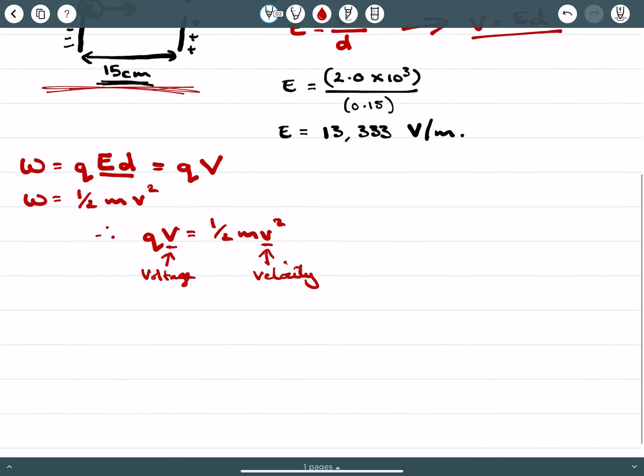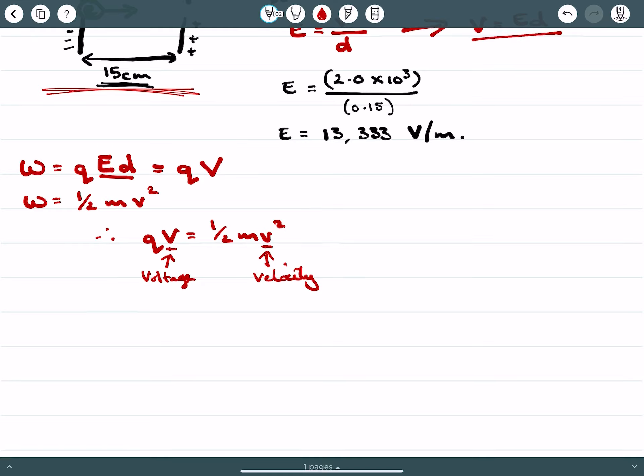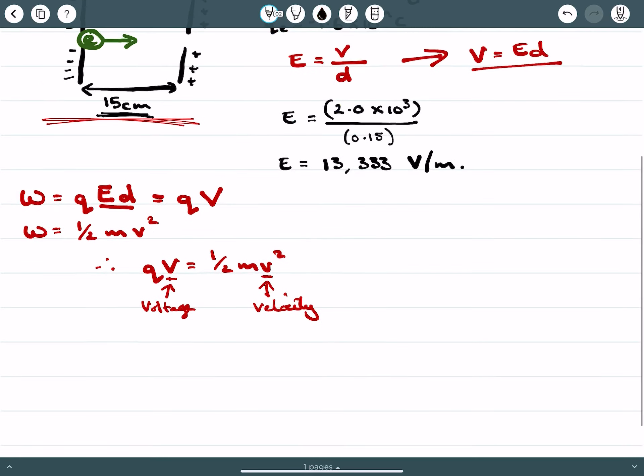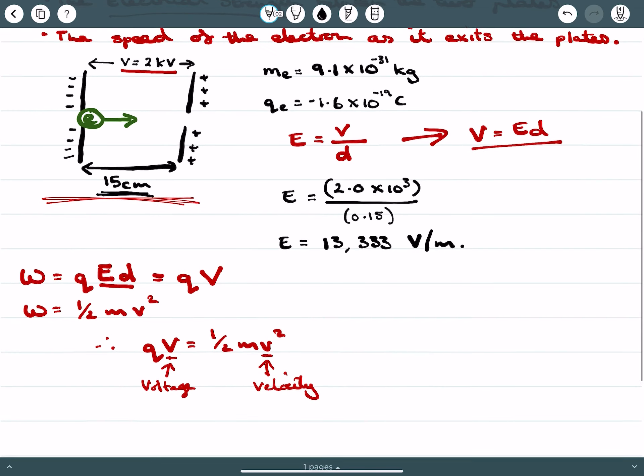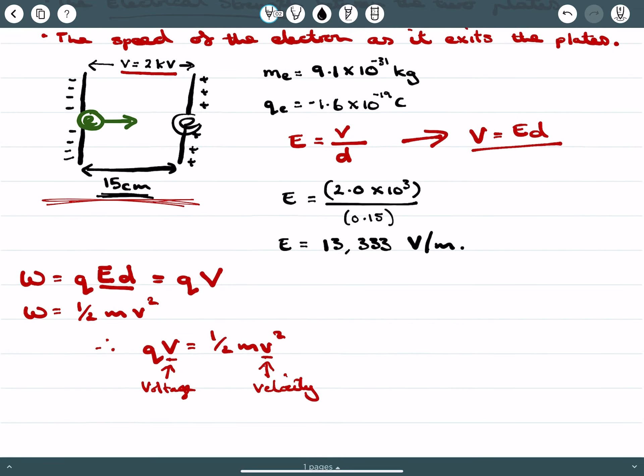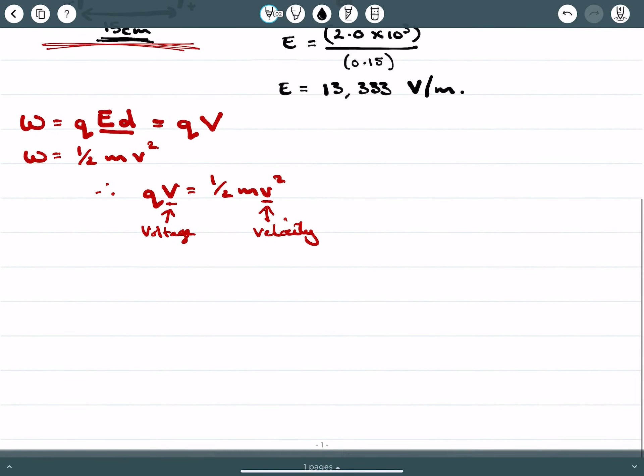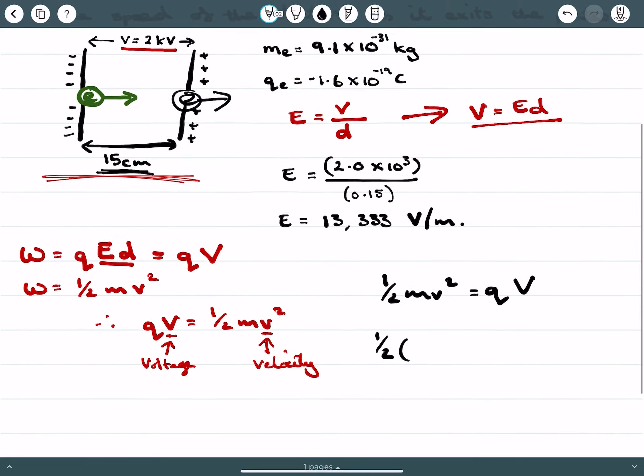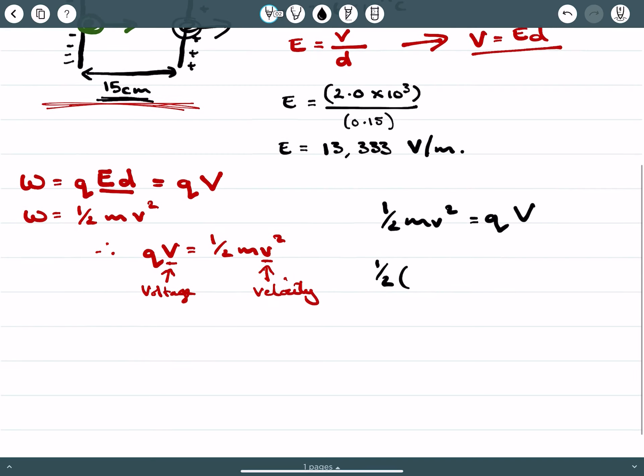So when we come to solving this problem, and remember the problem is to find the speed of the electron as it's exiting the plate, so it's gone through the uniform electrical field, what we're going to do is we're going to write it as half mv squared equals QV. We're going to substitute our value in half the mass of an electron. We have it here, 9.1 times 10 to the negative 31 kilograms.